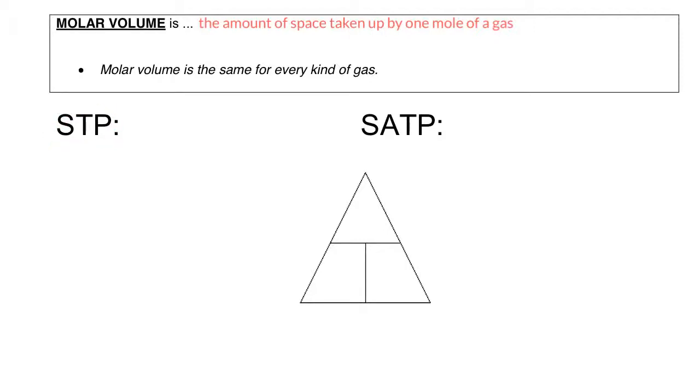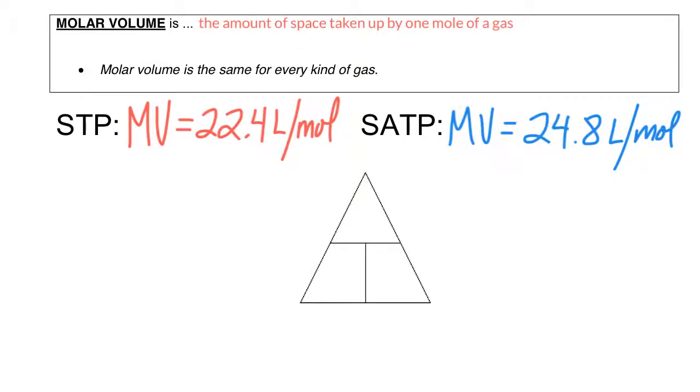This is why I've separated this next part out into STP and SATP. If you'll recall, STP is zero degrees Celsius and 101.325 kilopascals. SATP is 25 degrees Celsius and 100 kilopascals. Different temperatures and pressures will have different molar volumes. At STP, the molar volume of a gas is 22.4 liters per mole—that means one mole of gas will take up 22.4 liters of space at STP. At SATP, it's 24.8 liters per mole.